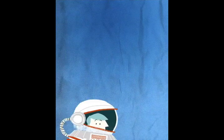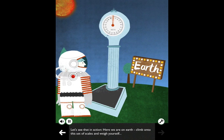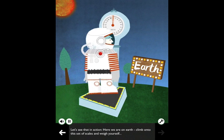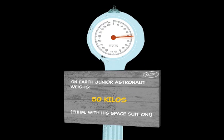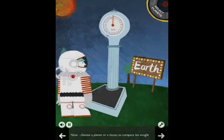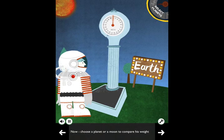Let's see that in action. Here we are on Earth. Climb into this set of scales and weigh yourself. On Earth, junior astronaut weighs 50 kilograms with his space suit on. Now, choose a planet or a moon to compare his weight.